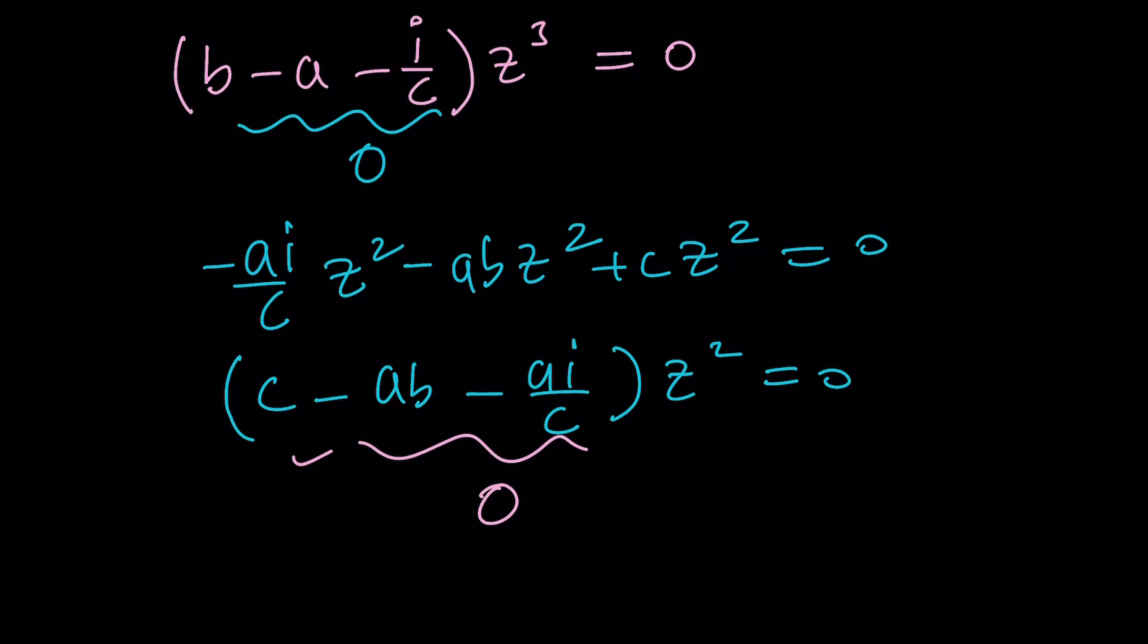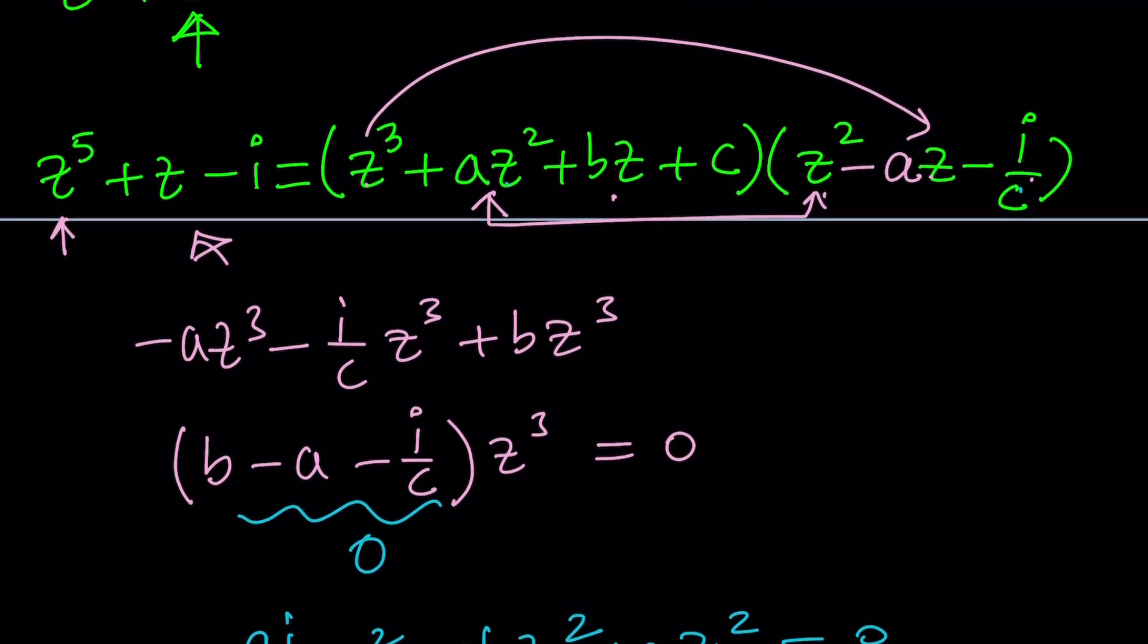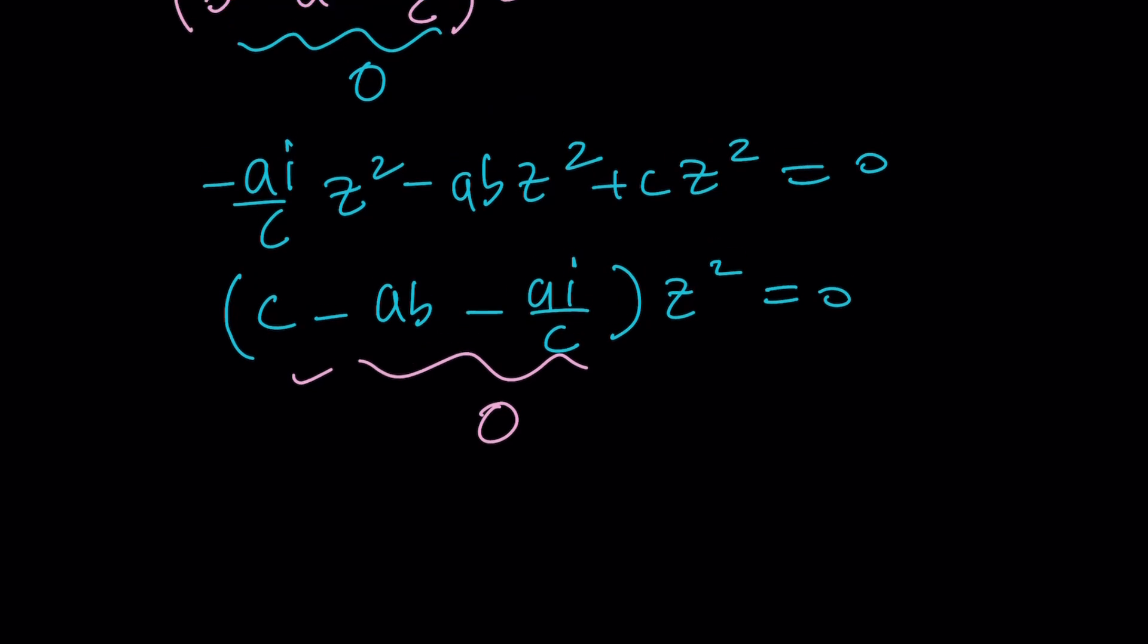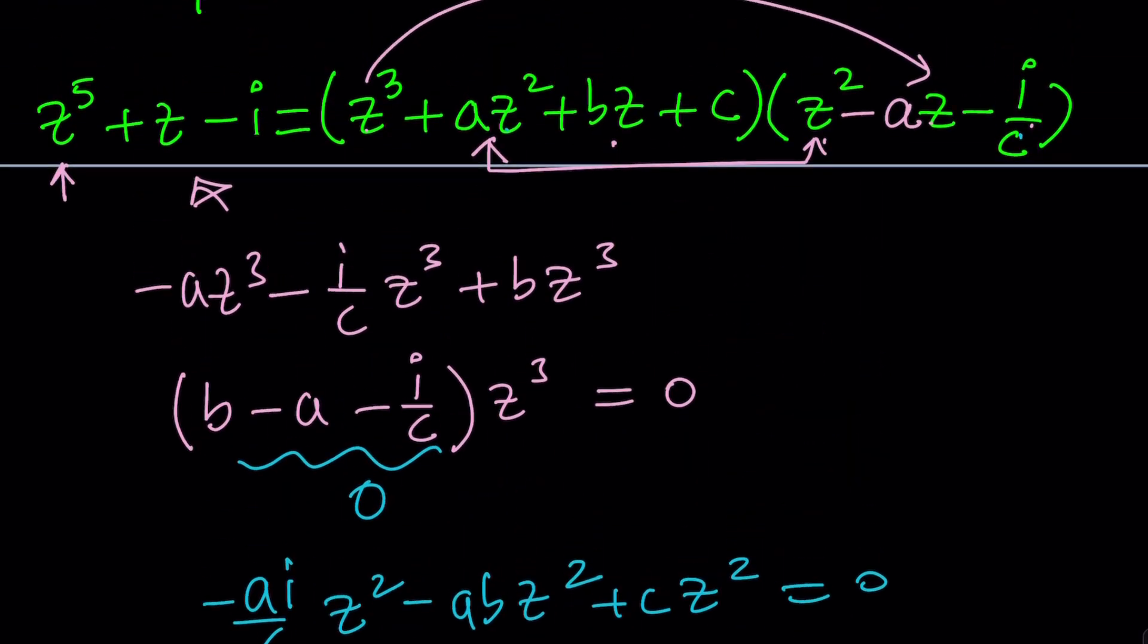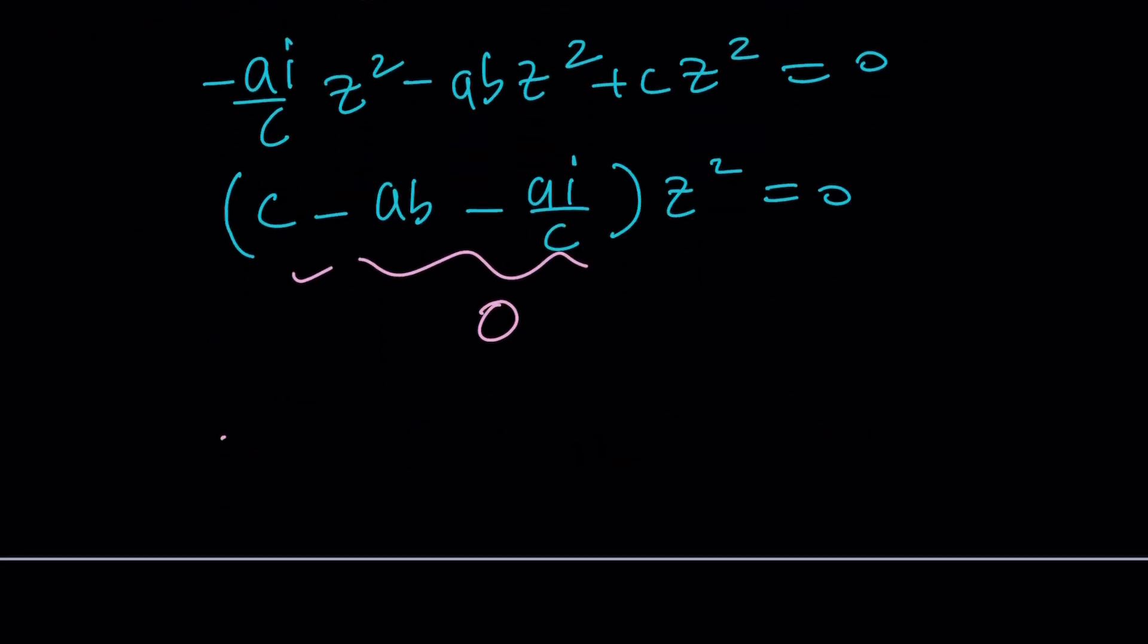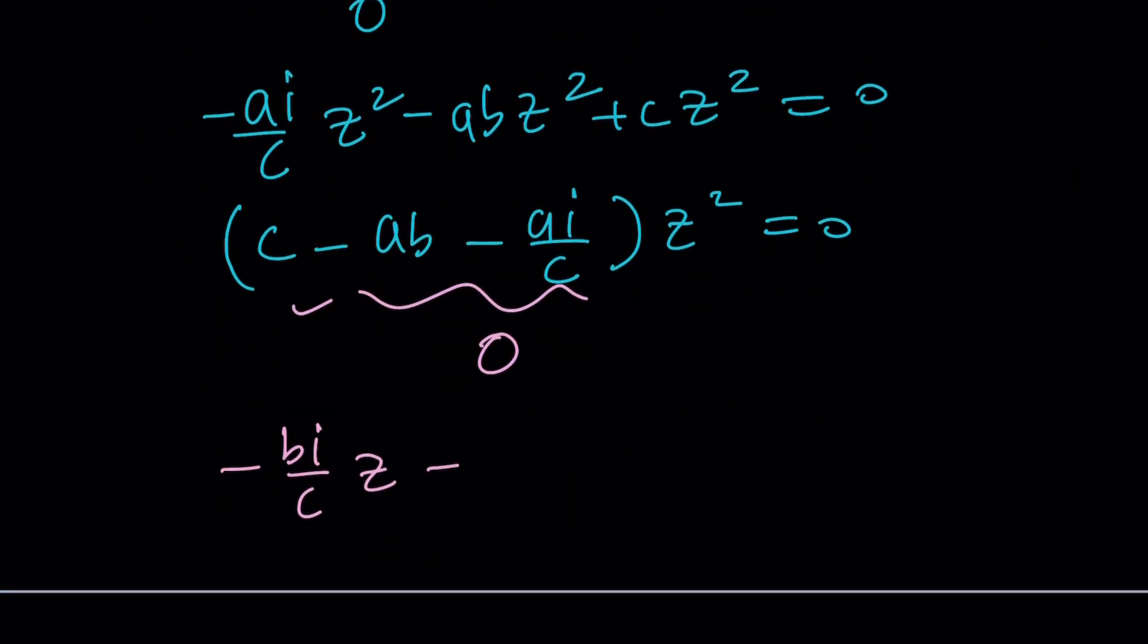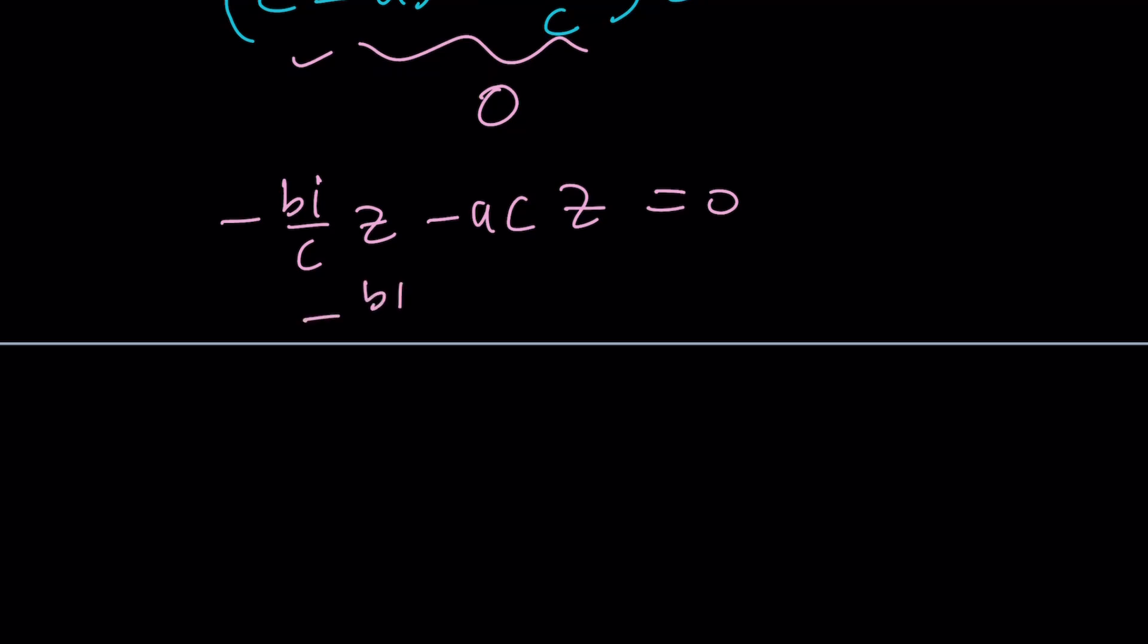Notice that we only have three variables, A, B, and C, which is nice. So we got rid of the other variables. Cool. So we got one more thing to do, which is the coefficient of z. To get a z, you must multiply Bz by that, so it's going to be negative Bi over C z. And is there another way to get a z? Yes. C multiplied by negative Az is going to give us minus AC multiplied by z equals zero. And again, by factoring out negative Bi over C minus AC equals zero. And from here, we get our third equation.